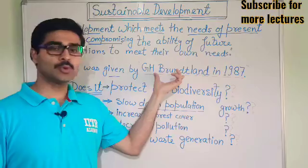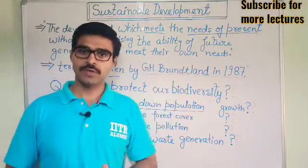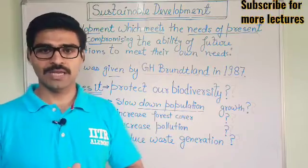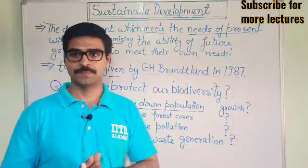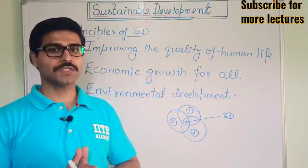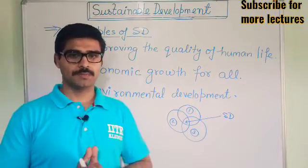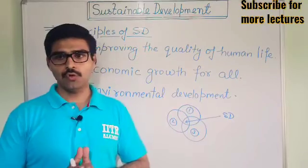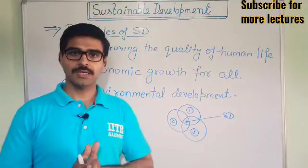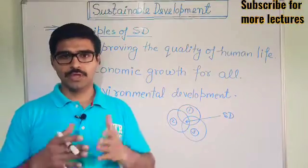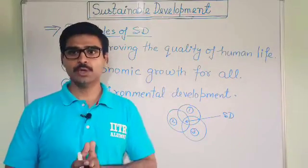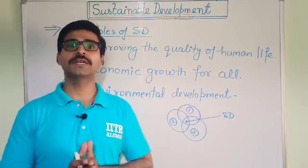G.H. Brundtland was a Norway Prime Minister and also the director of WHO, the World Health Organization. Now let us discuss the principles of sustainable development. Principles means how we can attain sustainable development — what are the points, what are the objectives. Sustainable development can be achieved if we work at three different levels.